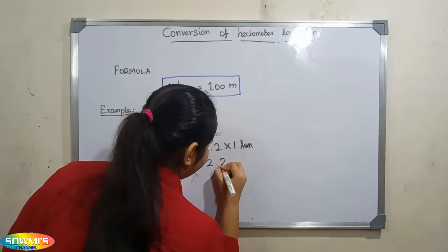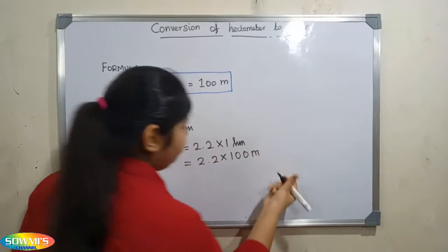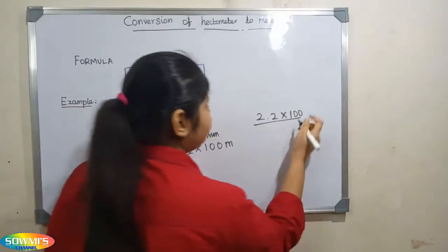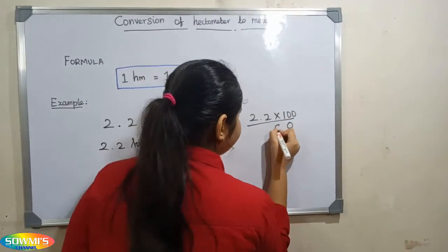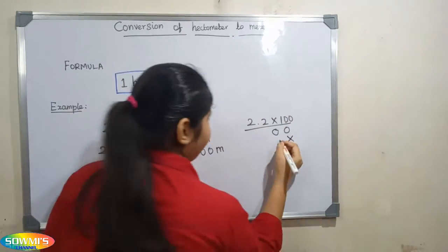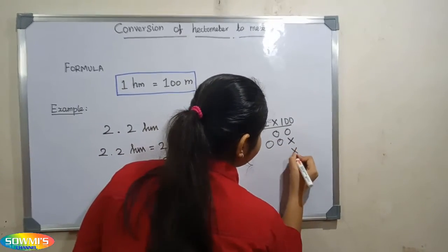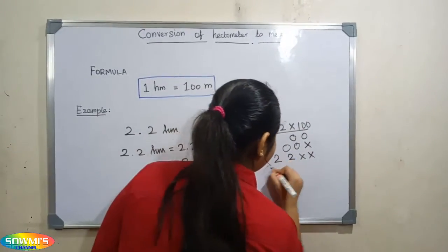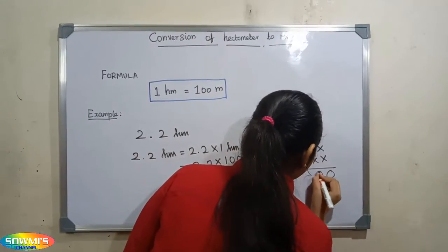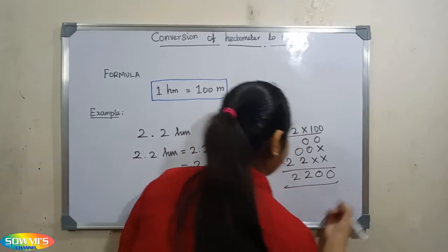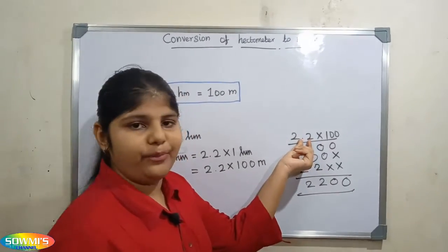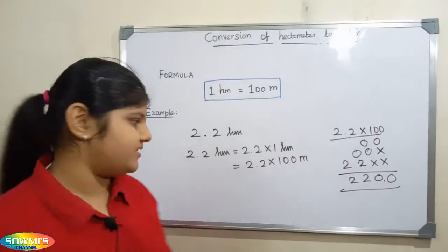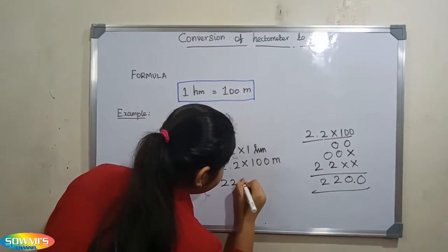So, 2.2 multiplied by 100 meter. Performing the multiplication: there is only one digit after the decimal point, so we keep the decimal point before one digit. The answer is 220 meter.